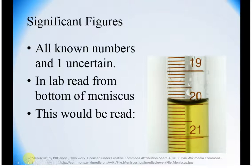When we say significant figures, we mean all known numbers and one uncertain. This is from a burette. Burettes have the smaller numbers up at the top, and they get larger as you work down. For example, this line right here is 19.0, this is 20.0 milliliters. In lab, when you are reading a volume, you want to do it from the bottom of the meniscus, which seems to be right there.